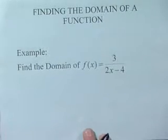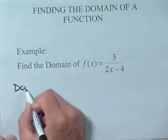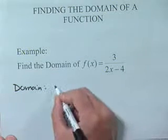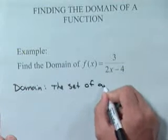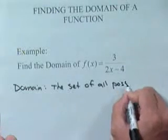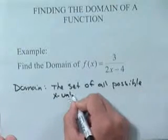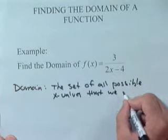Find the domain of f(x) = 3/(2x-4). Now remember, the domain is the set of all x values that we can put into our function, the set of all possible x values that we can put into the function.